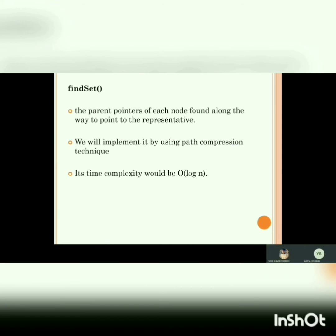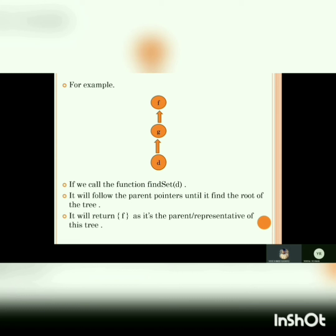Now let me explain find set. The parent pointers of each node found along the path will be updated to point directly to the representative. We implement this using path compression. The time complexity is O(log n). For example, with nodes F, G, and D — if we call find set D, it will follow the parent pointers until it finds the root of the tree and return F, as it is the parent representative of this tree.